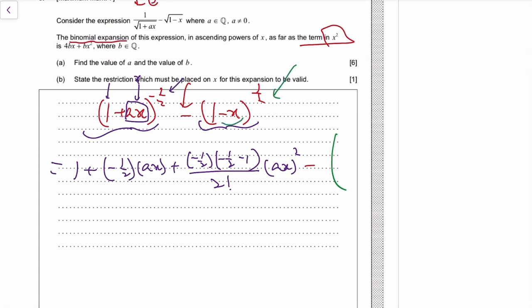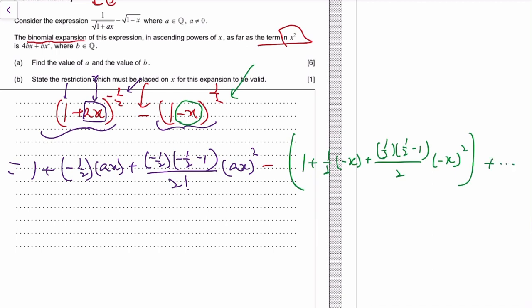We'll take negative x as the x, so it's 1 plus n to the power of x plus n times n minus 1 over 2 factorial times negative x squared, and there will be a bunch of other terms.